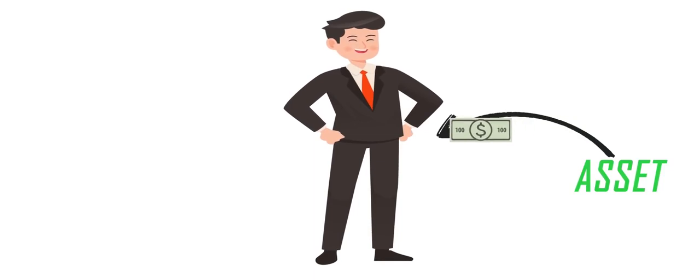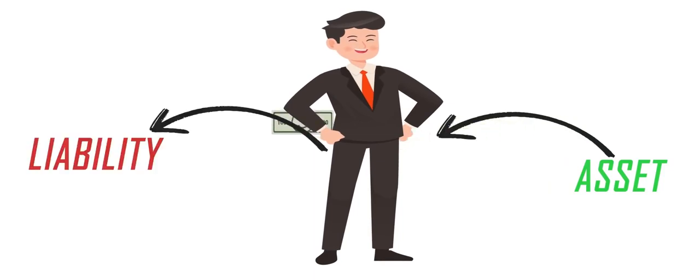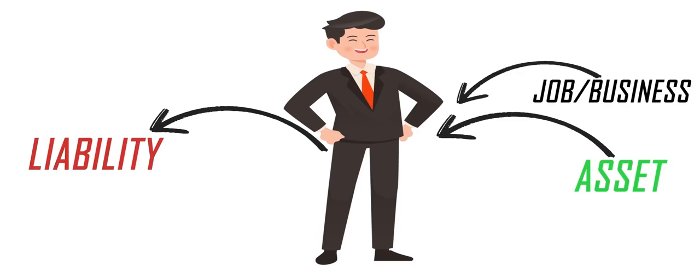An asset is something that puts money in my pocket. A liability is something that takes money out of my pocket. In a typical cash flow pattern, income is from sources that include your monthly income from job or business, and your asset income, which can include stocks, bonds, real estate, intellectual property which create income in the form of dividends.